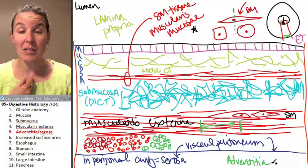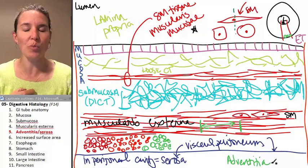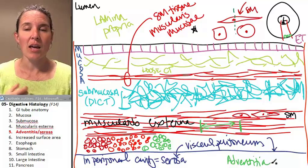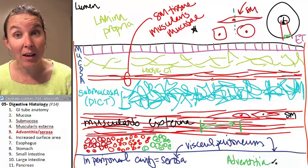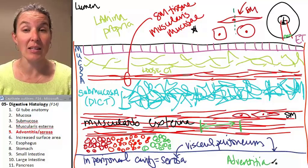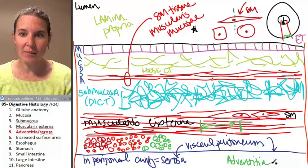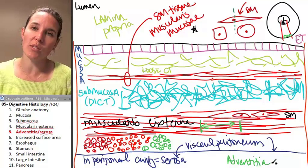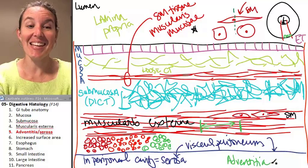If you're looking at some esophagus, then you can pretty much guarantee that you're looking at adventitia as the outermost layer. If you're looking at stomach, then you can guarantee that you're looking at serosa as the outermost layer. Duodenum, adventitia. Jejunum, serosa. That's it.